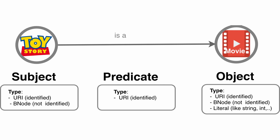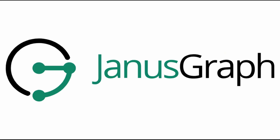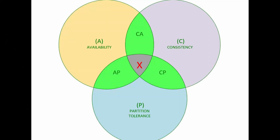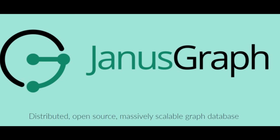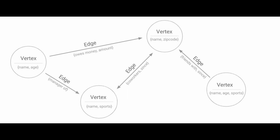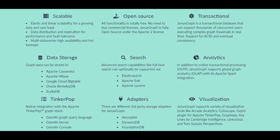Now let's look at JanusGraph — what it is, how installation works, the CAP theorem it follows, and its internal architecture. JanusGraph is a property-based graph database constructed using two attributes: vertices and edges. What makes JanusGraph special compared to other graph databases is that it is highly scalable, supports data distribution and replication for performance and fault tolerance, has hot backups, and offers multi-data-center high availability.